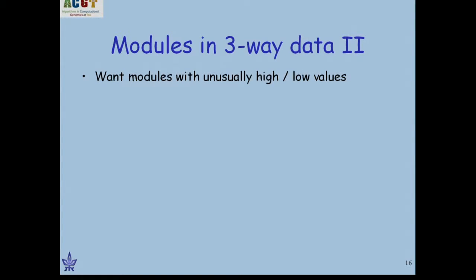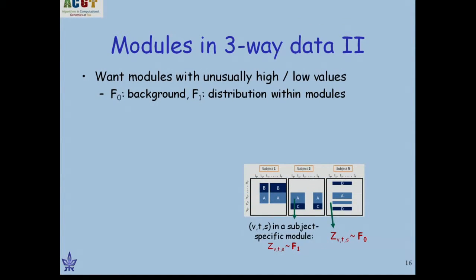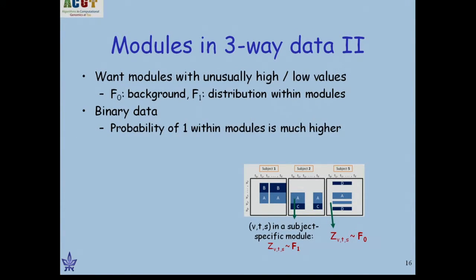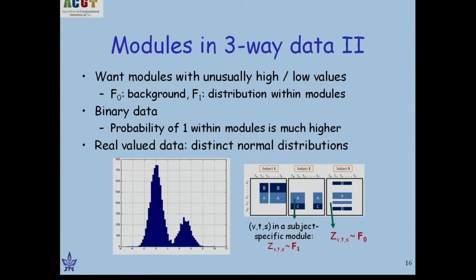We want modules that are unusual compared to the background — either unusually high or unusually low values. Assuming the simplest thing: two distributions, one for background values and one for values within modules. The white part has distribution F0 and the blue parts have distribution F1. For binary data, the probability of one is higher in the blue part. For real-valued data, assume two normal distributions where the blue part has a higher mean.